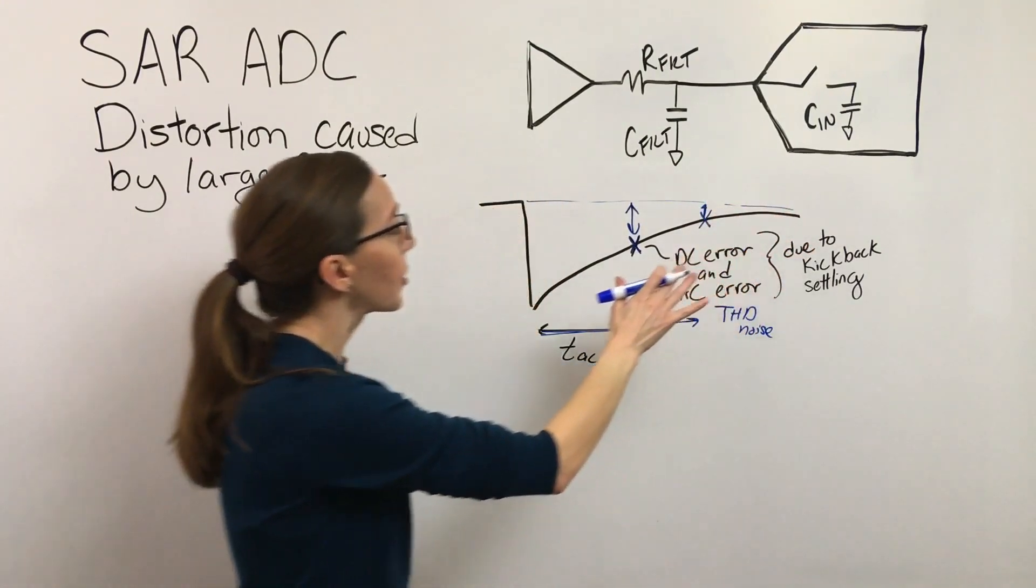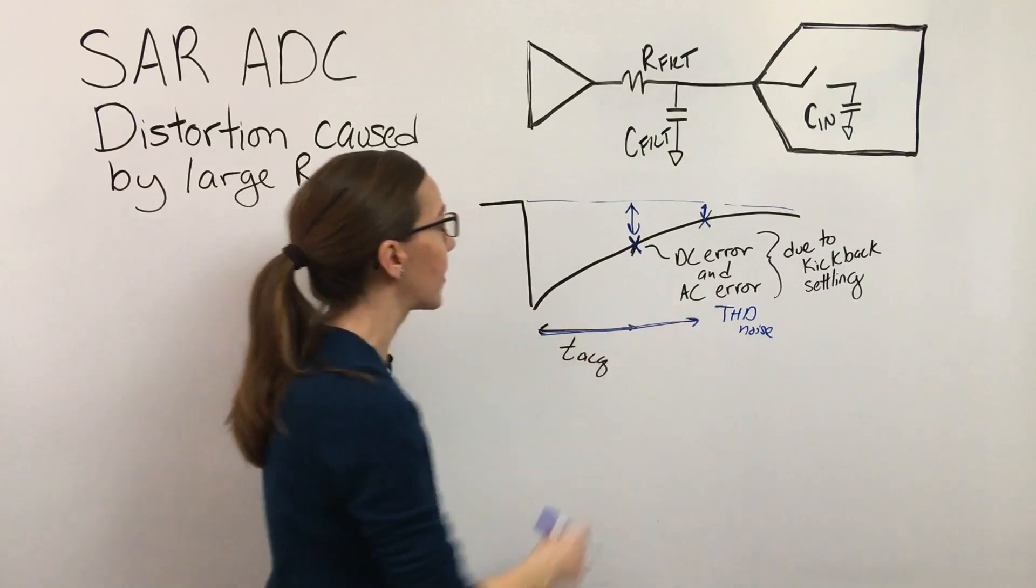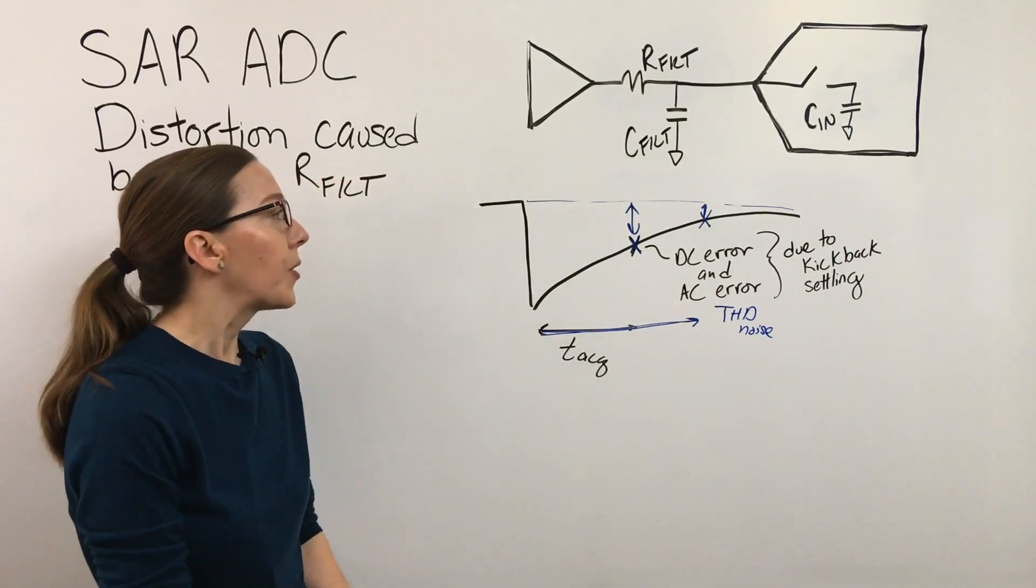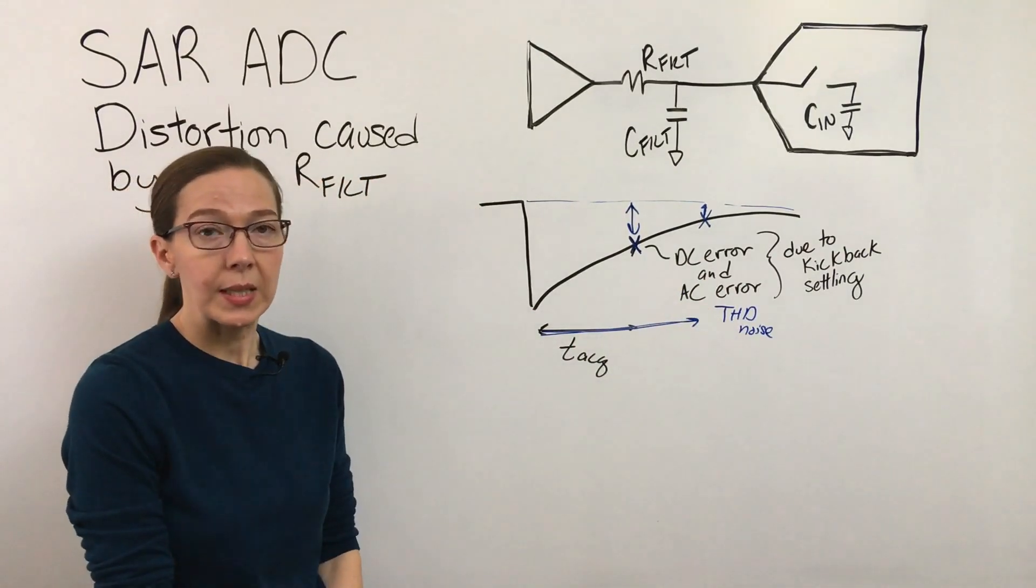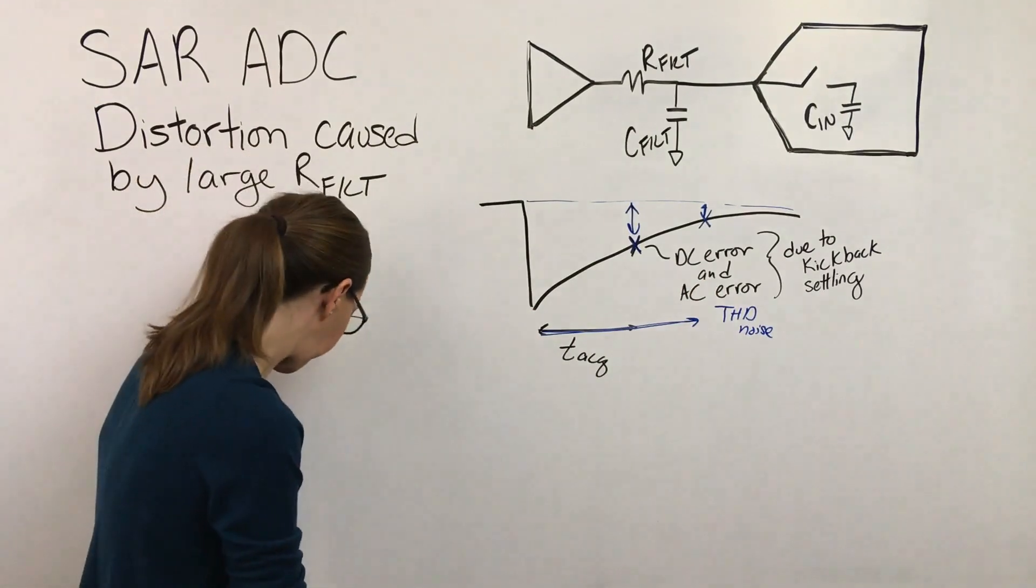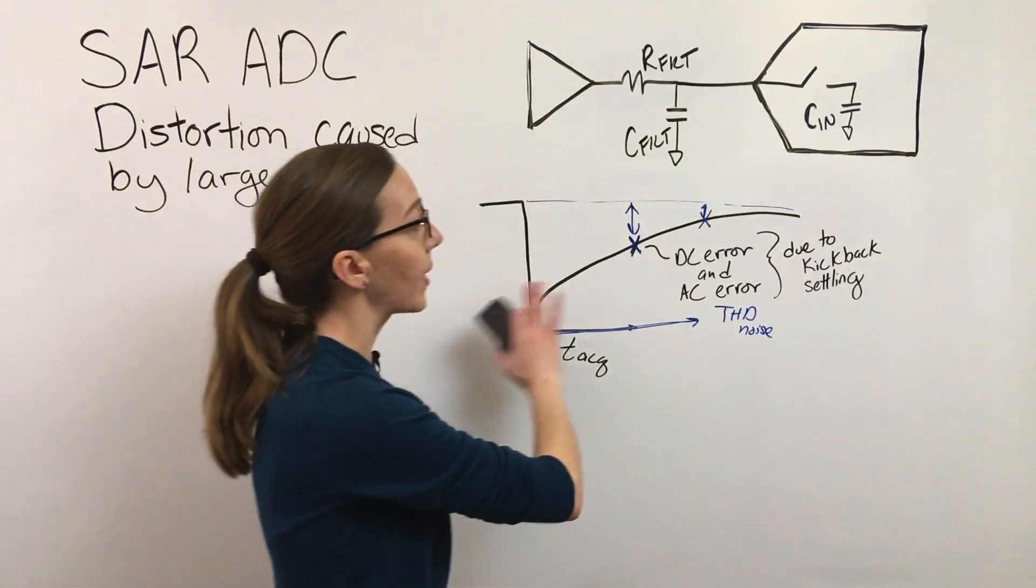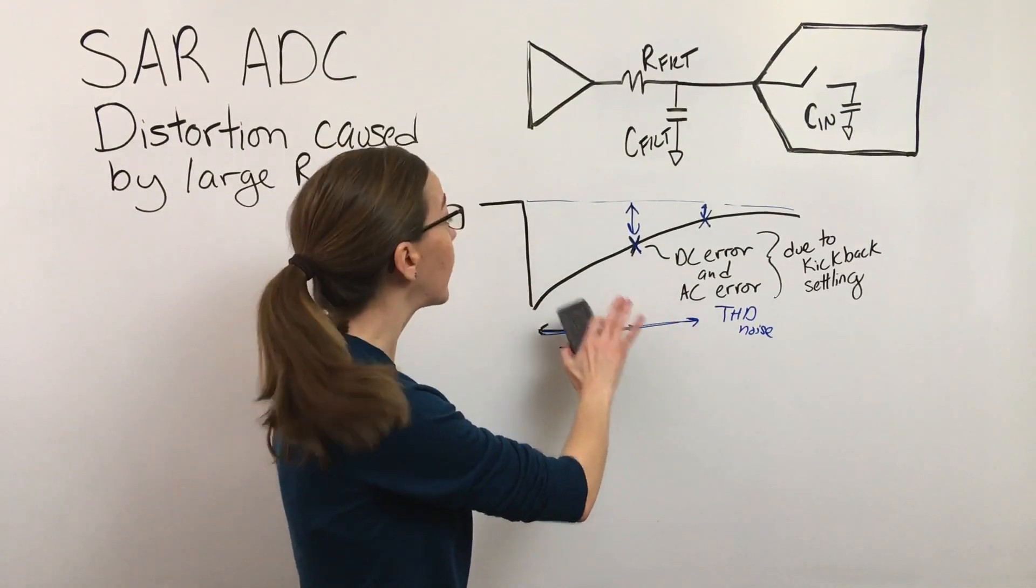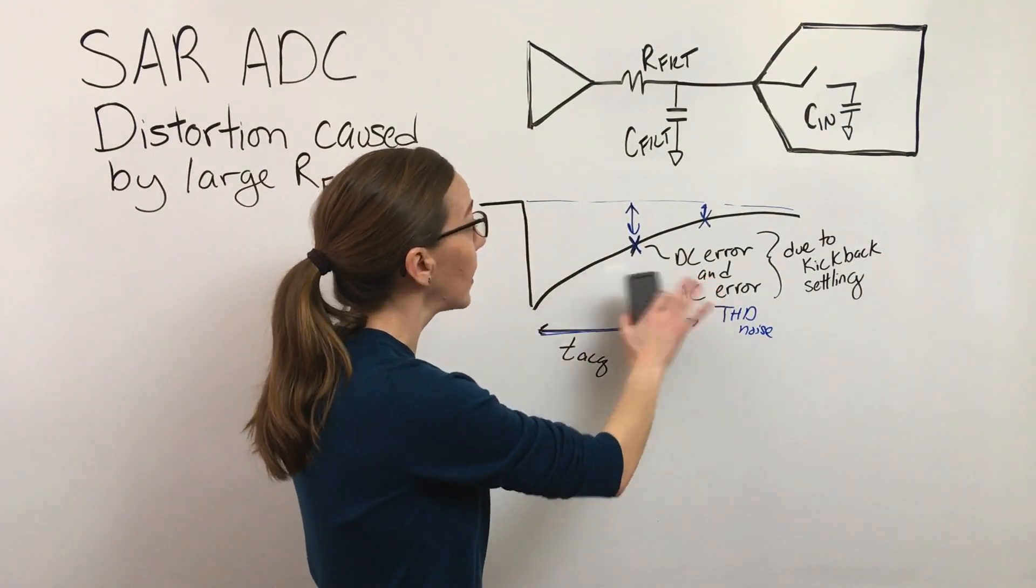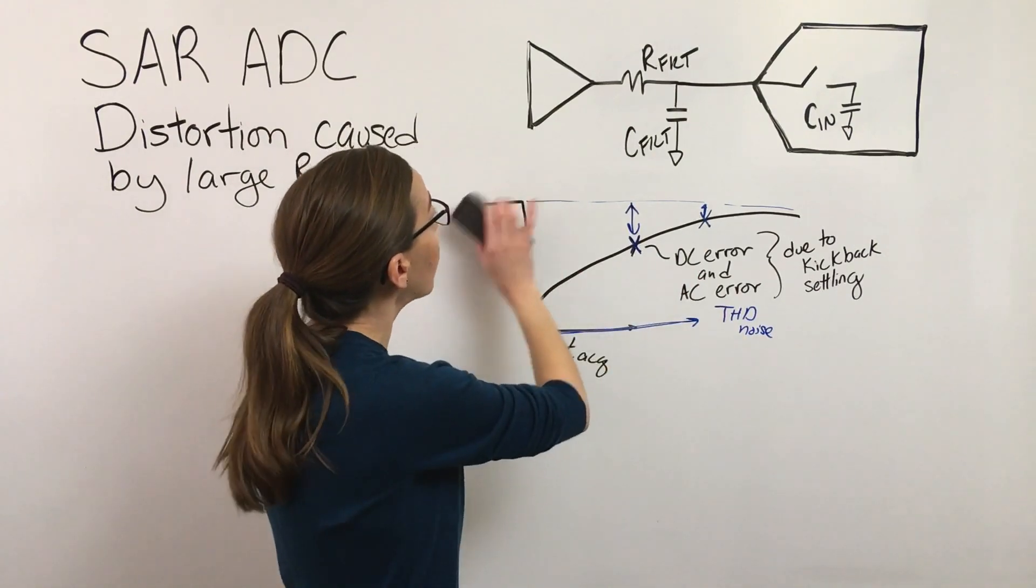You can see here that basically this error term can get lesser as you increase this acquisition cycle. So that's just something to understand as we get into this topic.